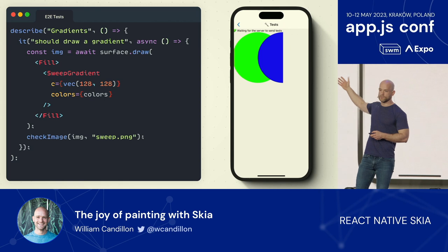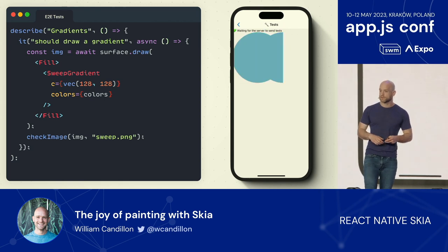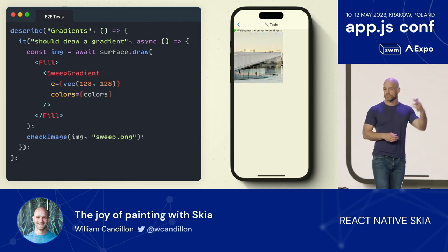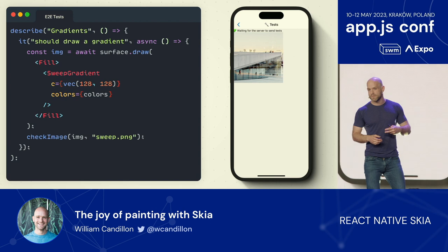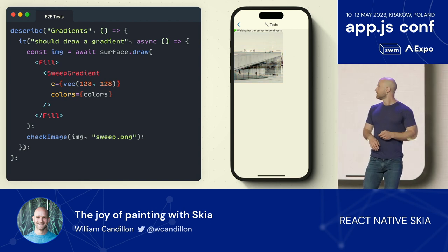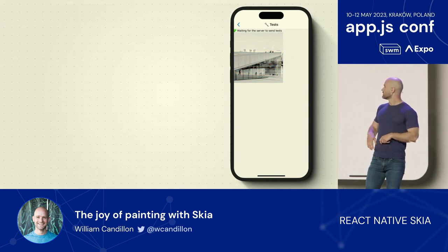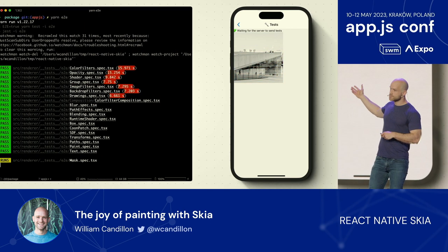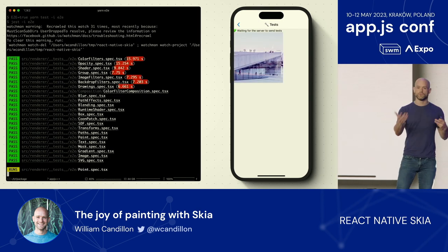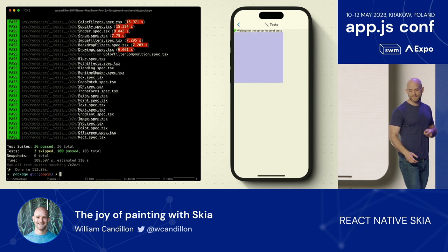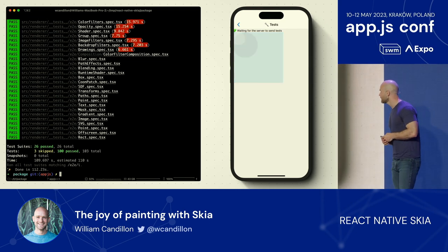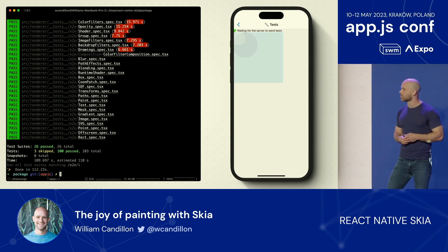We use it to run end-to-end testing. We use the Skia renderer with Jest — we ask it to generate a documentation image and check it for correctness. You can also serialize the tree, send it to an iOS and Android device to do end-to-end testing, get the image as a result, and check for correctness.